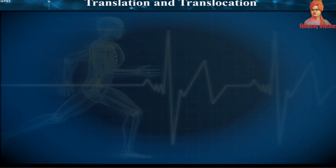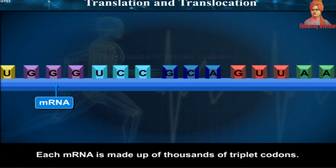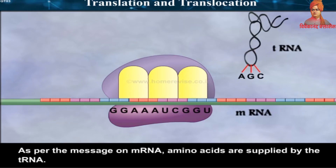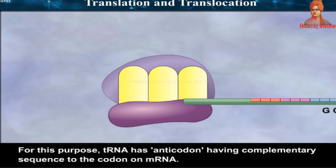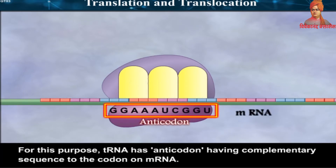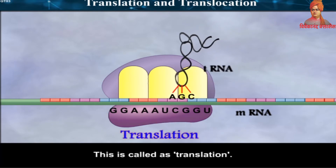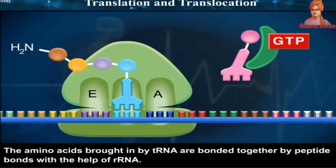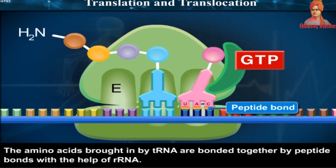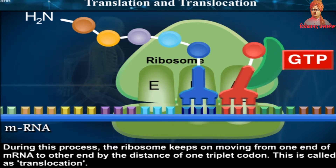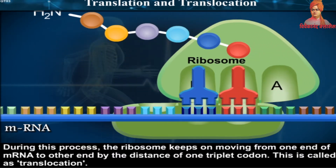Each mRNA is made up of thousands of triplet codons. As per the message on mRNA, amino acids are supplied by tRNA, which has an anti-codon having complementary sequence to the codon on mRNA. This is called translation. The amino acids brought in by tRNA are bonded together by peptide bonds with the help of rRNA. During this process, the ribosome keeps moving from one end of mRNA to the other by the distance of one triplet codon — this is called translocation.